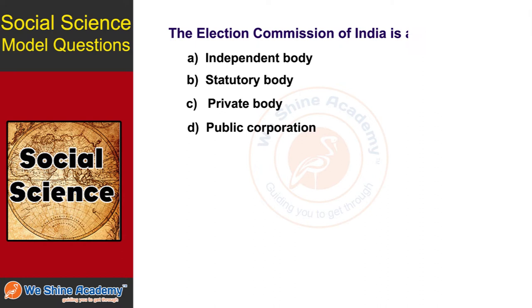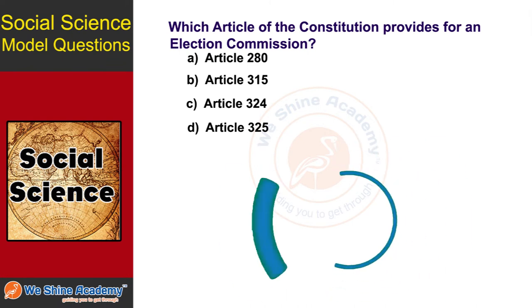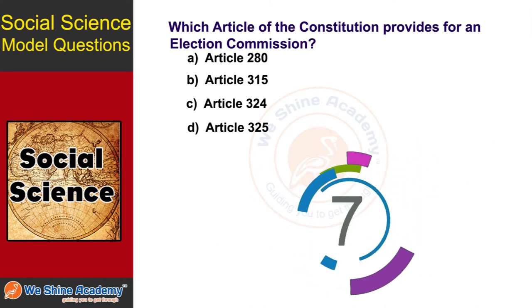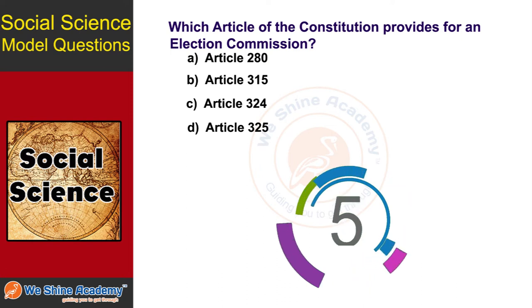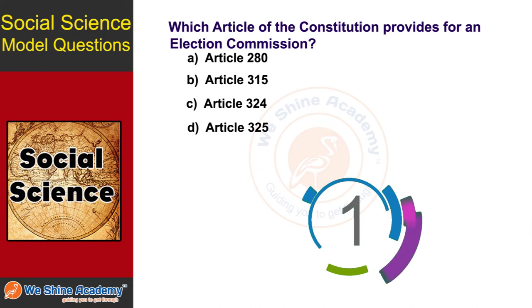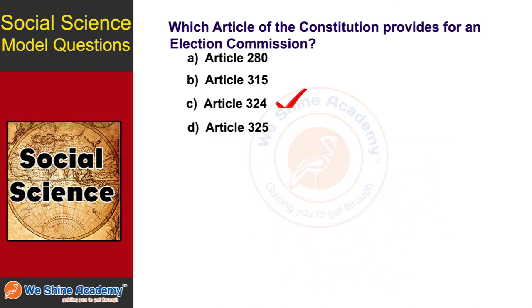The next question is: Which Article of the Constitution provides for an Election Commission? The answer is Option C, Article 324.